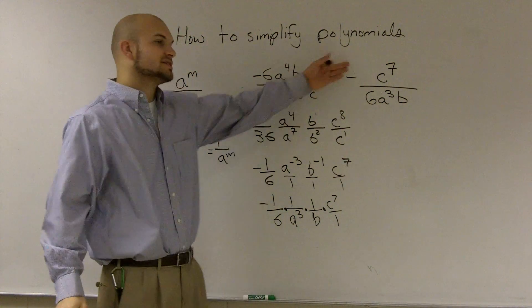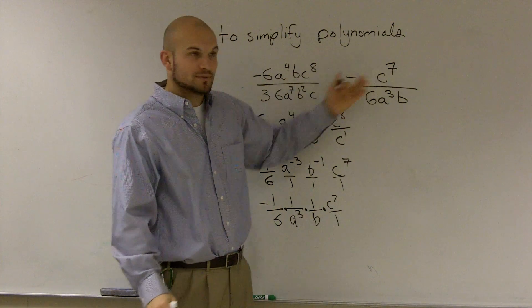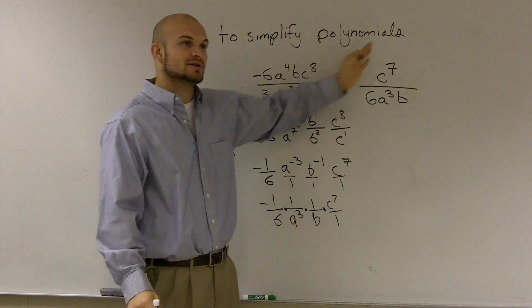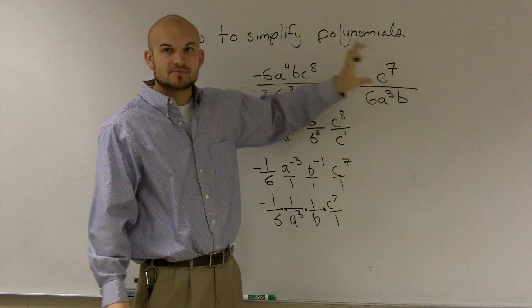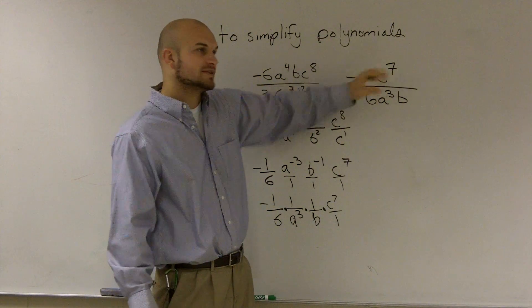Now, I have everything simplified, so now this is what we call a monomial. It has multiple terms inside the monomial, but there's no addition or subtraction separating terms, so it is a complete monomial, everything simplified.